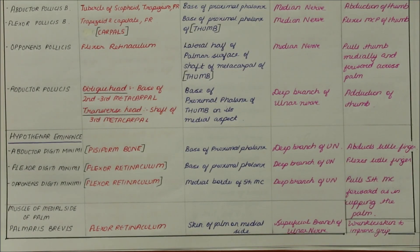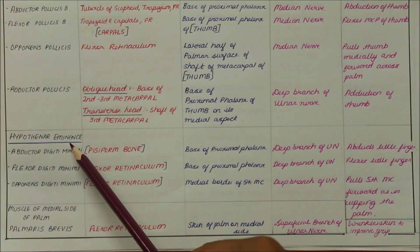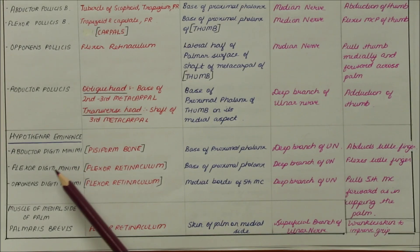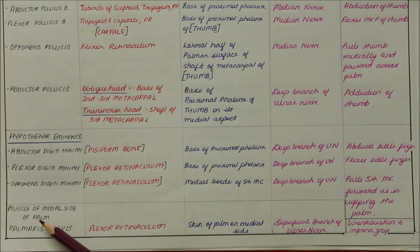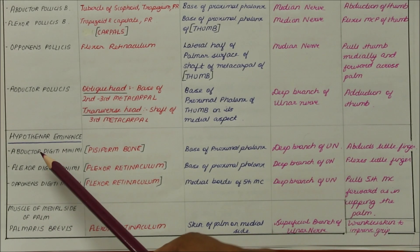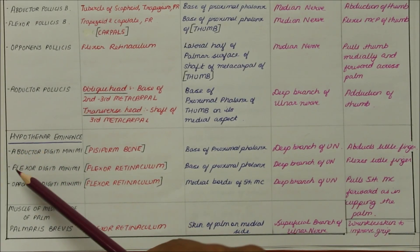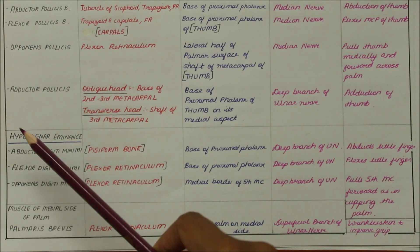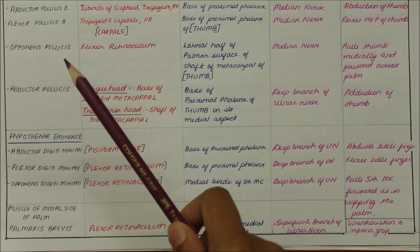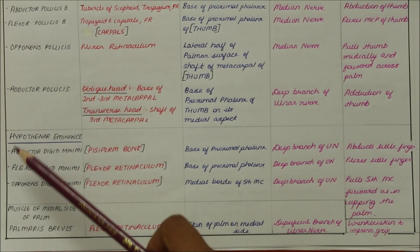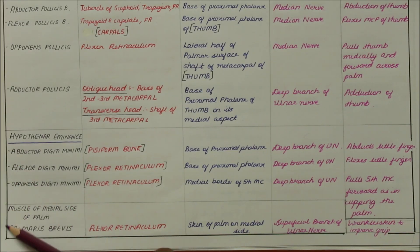Moving on to the hypothenar eminence, we have the abductor digiti minimi, the flexor digiti minimi, the opponens digiti minimi, and the palmaris brevis on the medial side of the palm. An easy way to remember these four muscles is A, F, O, and P — unlike the thenar group which uses A, F, O, and A.